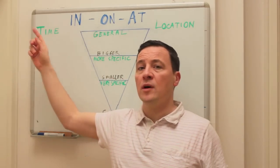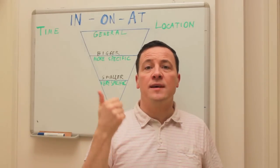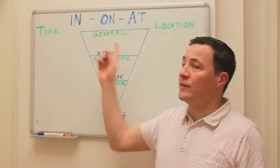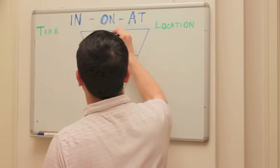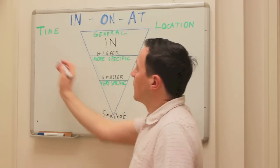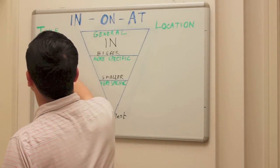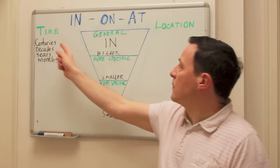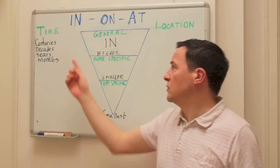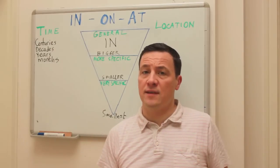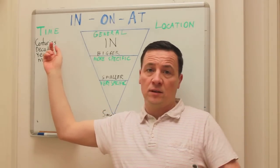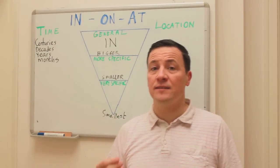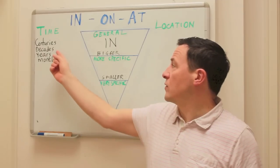When you're talking about centuries, decades, years, months, weeks, you would use 'in'. So you would say, for example, in the 18th century, or in the 19th century, in the 20th century, or in the 80s. When were you born? Were you born in the 70s? Were you born in the 80s? Were you born in the 90s? So 'in' is used for decades.